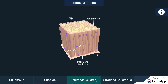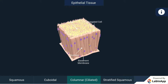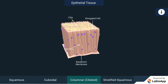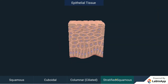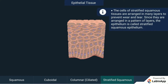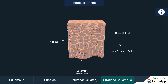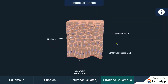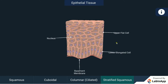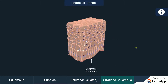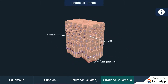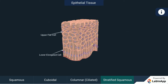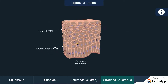Stratified squamous epithelium: Skin epithelial cells are arranged in many layers to prevent wear and tear. Since they are arranged in a pattern of layers, the epithelium is called stratified squamous epithelium. We find these kinds of tissues in the skin and also in the lining of the esophagus.